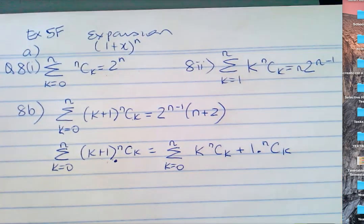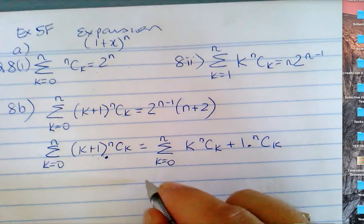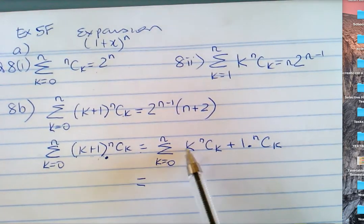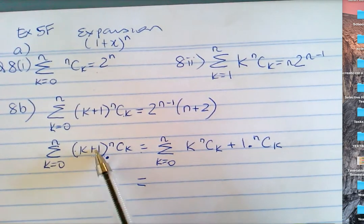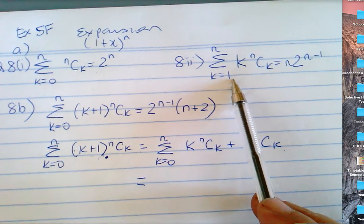Now you can see exactly what to do. k plus 1 times nCk is k times nCk plus 1 times nCk. That is the result from part one — hence, it says hence. So what's the sum of terms? But this is from k is zero, while that one's from k is one.